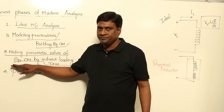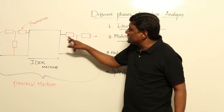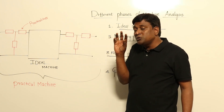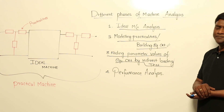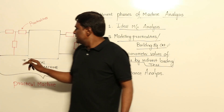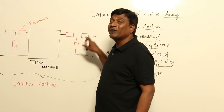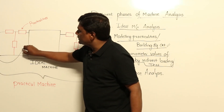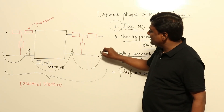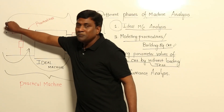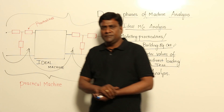In Phase 4, you already have the equivalent circuit and the parameter values from indirect loading tests. Now you apply performance analysis. Applying ideal machine analysis from Phase 1 and network theory to the equivalent circuit, a practical machine can be fully analyzed — for example, output power divided by input power gives efficiency.